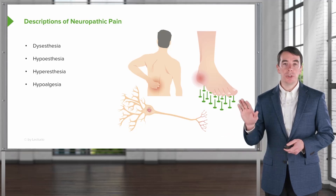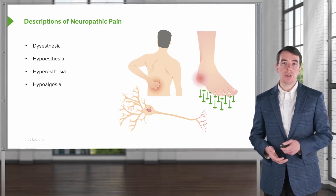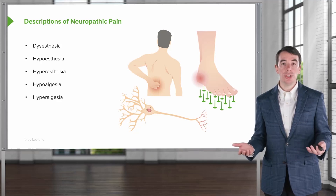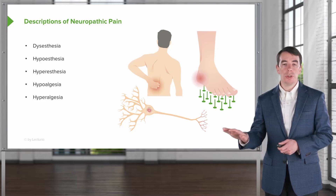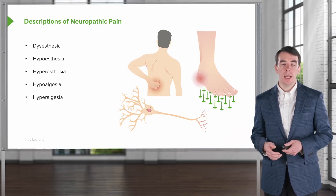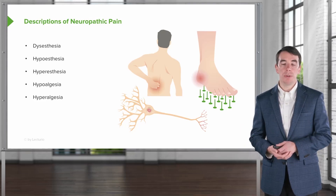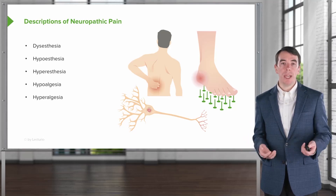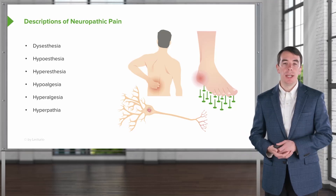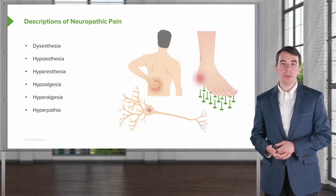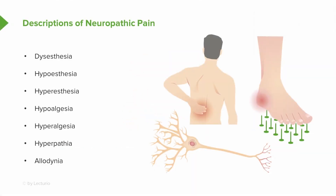Hypoalgesia means feeling a painful stimulus less, and we can see this description with a number of neuropathic pain syndromes. Hyperalgesia means feeling a painful stimulus more — there's reduced threshold and increased sensitivity of the nerves, and patients describe a painful stimulus that is more vigorous; slightly warm water may feel quite painful or hot. Hyperpathia has a similar description: patients feel a painful stimulus worse and more, with a reduced threshold to firing of those pain neurons. Allodynia is a common word used to describe neuropathic pain — feeling a painful sensation in response to a non-painful stimulus. Any of these words can be used to describe neuropathic pain syndromes.